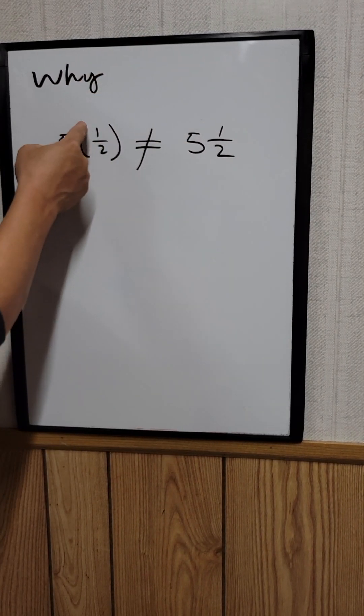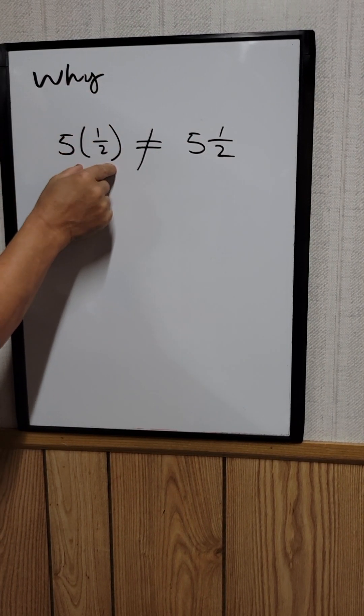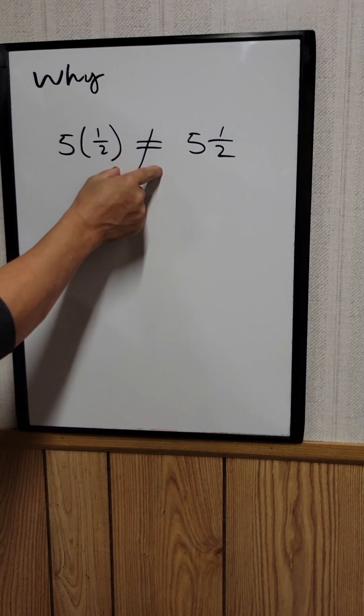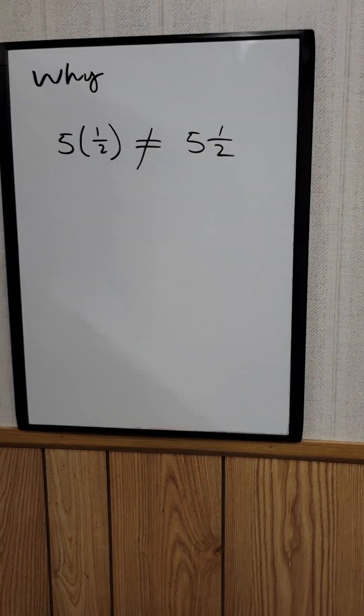So why is 5 times 1/2 in parentheses not equal to 5 and 1/2? Why are these two not equal?